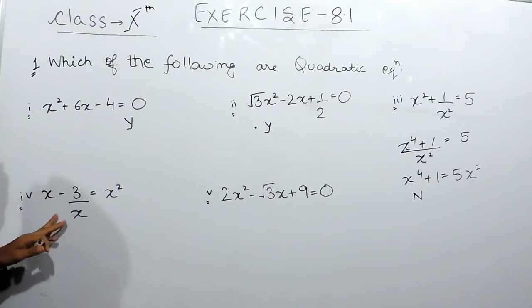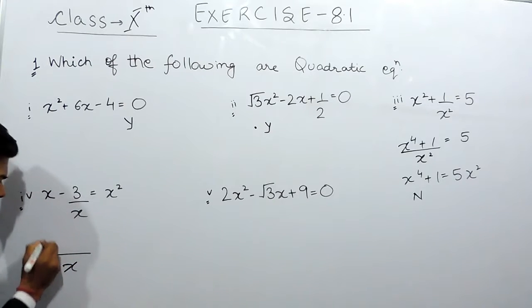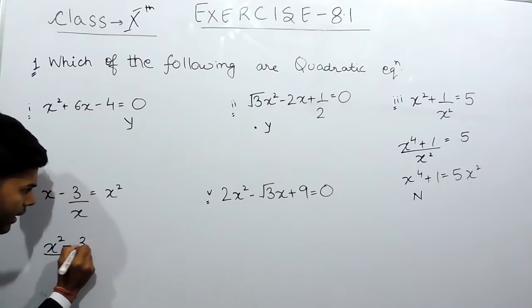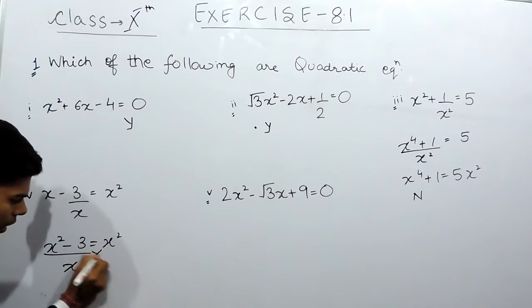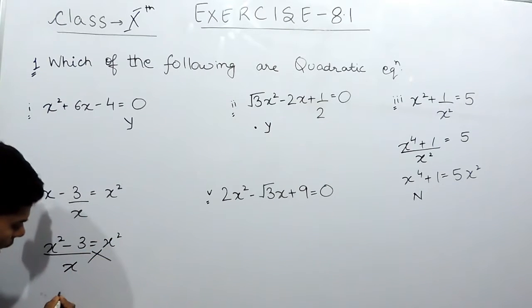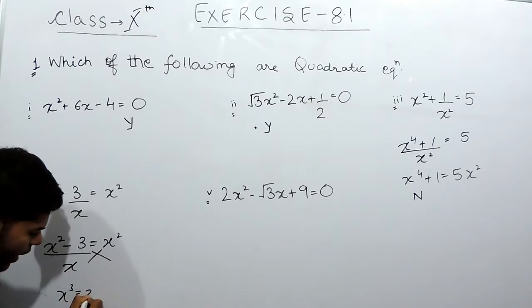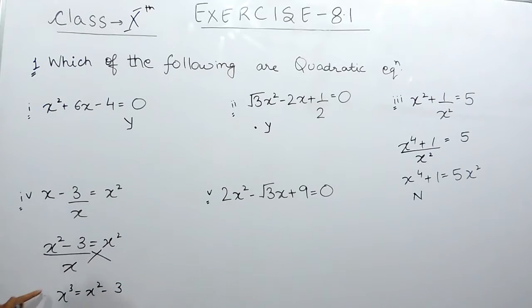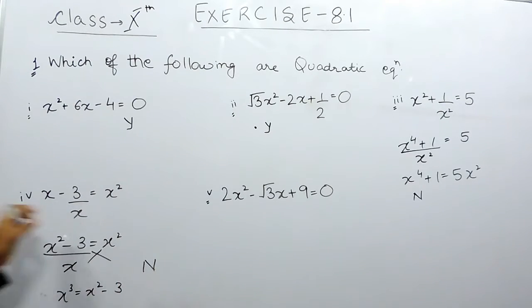In the fourth part, the LCM is x. Multiplying through gives x times x, which is x squared minus 3, equals x squared. Cross-multiplying gives x cubed equals x squared minus 3. Here the highest degree is 3, which means this is not a quadratic equation.